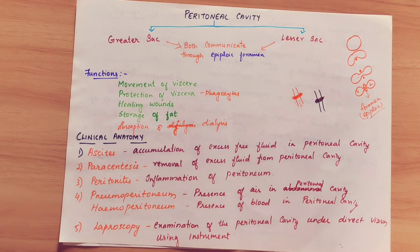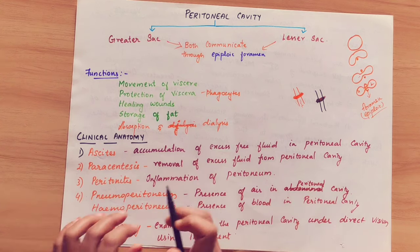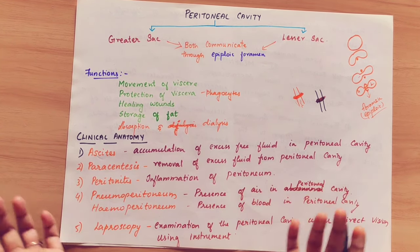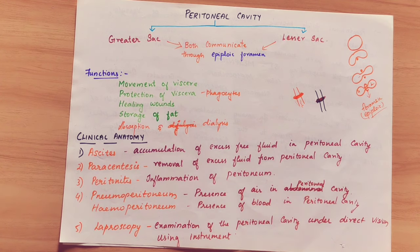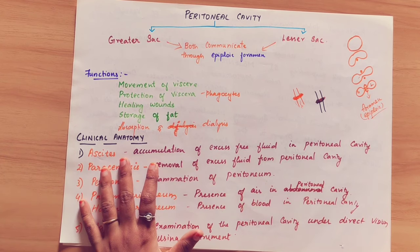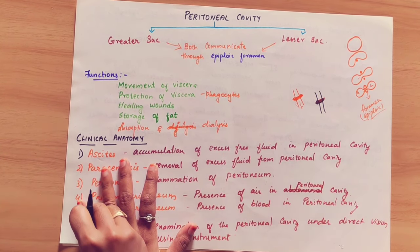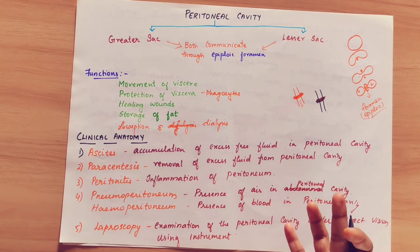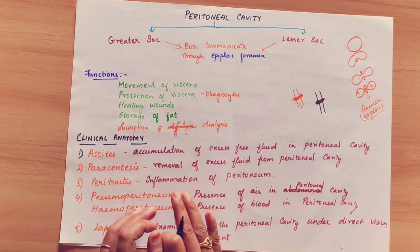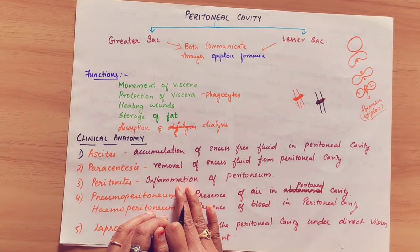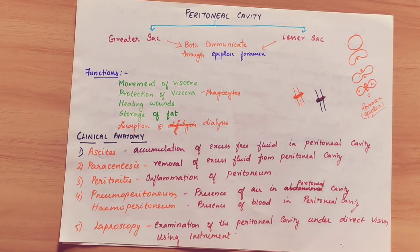Another function is storage of fat — obese people have excess fat stored in the peritoneal fold. Coming to absorption and dialysis: the mesothelial membrane is a semi-permeable membrane, so fluids and small molecules pass through easily. If there is excess fluid in the body, it can accumulate in the peritoneal cavity. This property allows peritoneal dialysis to be performed in renal failure patients.